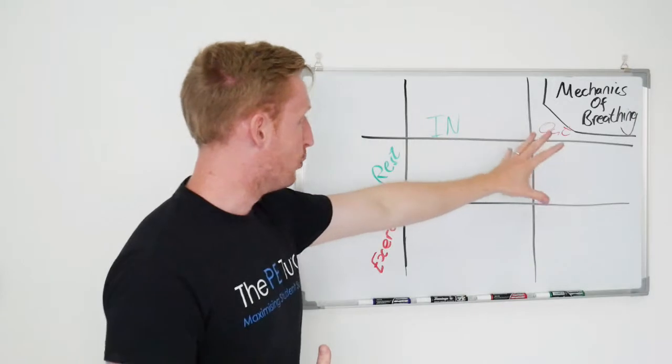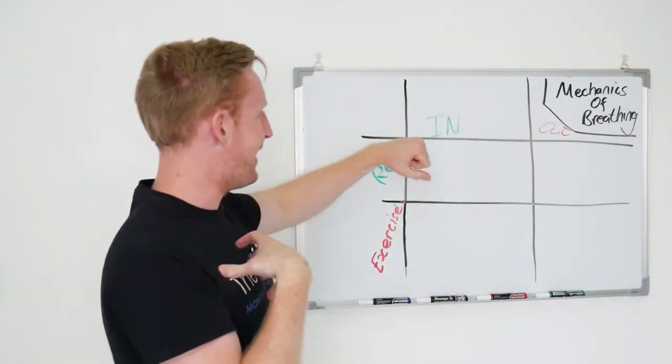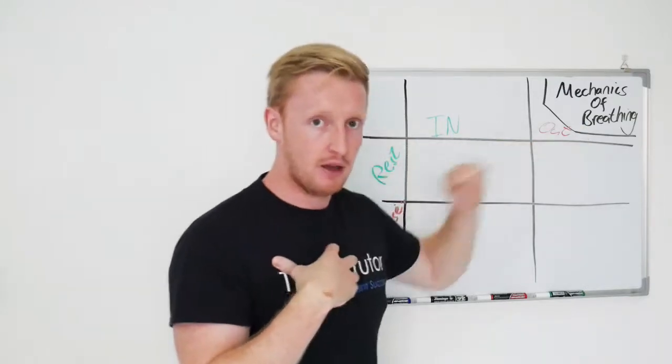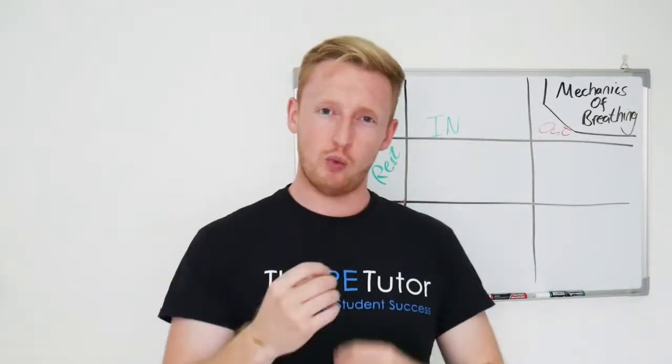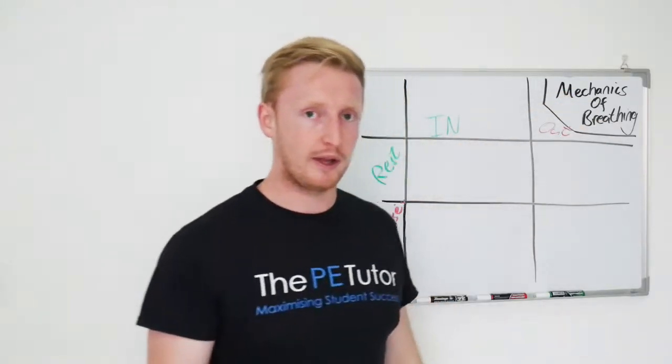So what we're going to go through is this table on the board and talking about how we actually get air into our body at rest and then out again and then when we do start to exercise what changes occur to get air in quicker and air out quicker.